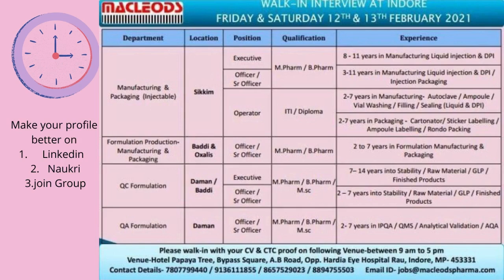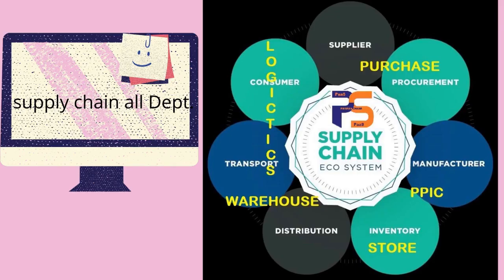When you Google it, they give you all these supply chain things, but in fact all are scattered across various departments. Suppliers and procurement lie in the purchase department, manufacturing and inventory in PPIC, inventory also in the store, distribution and transportation in the warehouse, and consumer and transportation in logistics.